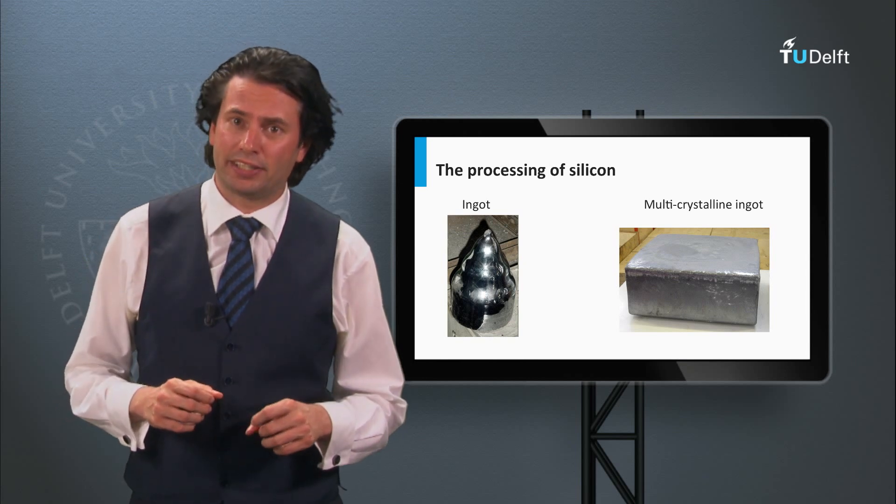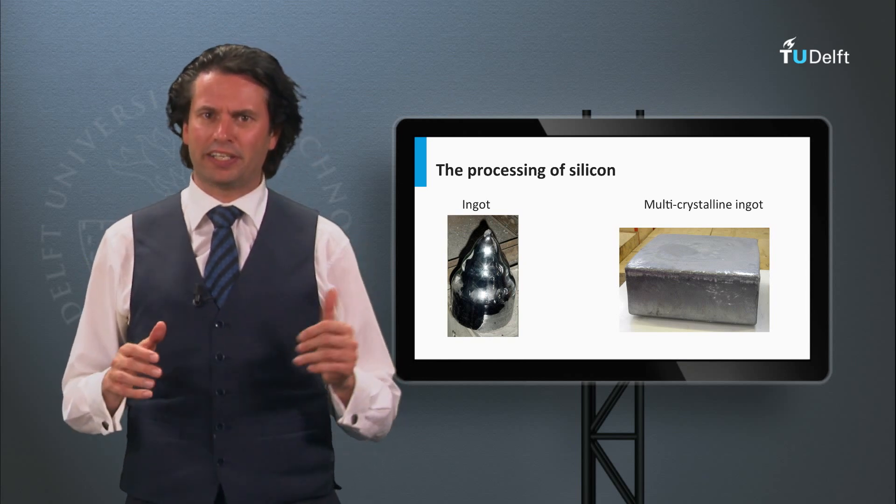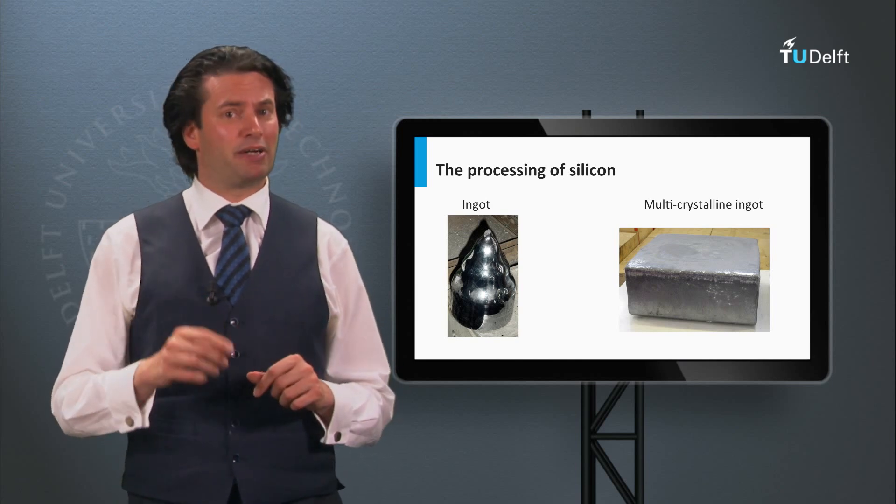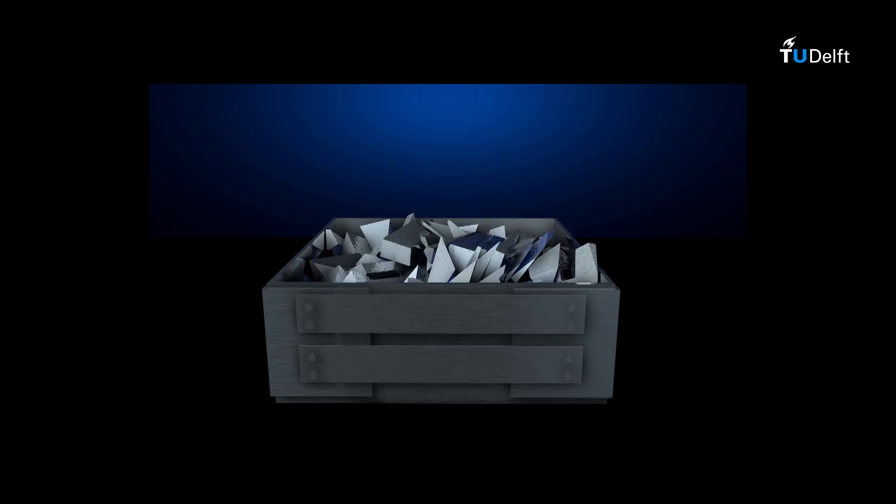Next to monocrystalline silicon ingots, multicrystalline silicon ingots can be processed as well. As you can see in the next animation. Multicrystalline and polycrystalline silicon consist of many small crystalline grains. This can be made by melting highly purified silicon in a dedicated crucible and pouring the molten silicon in a cubic shaped growth crucible. Here, the molten silicon solidifies into multicrystalline ingots. This process is called silicon casting.